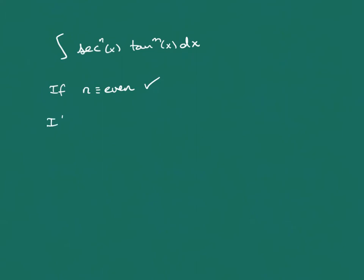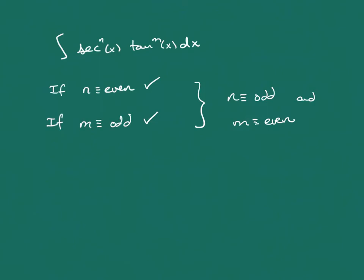We also discussed what happened if m was odd — if our power on tangent was odd, we knew what to do in that case. The case we're dealing with now is how do we wrap this up if n happens to be odd and m is even. Once we take care of this one, we've covered all eventualities, so let's jump forward and see how we can deal with this case.